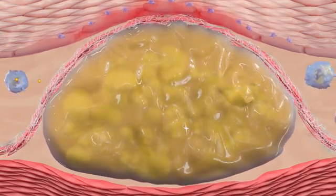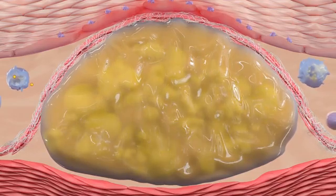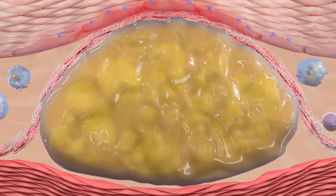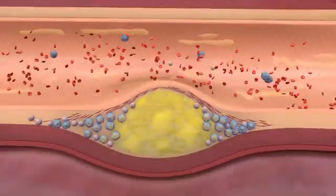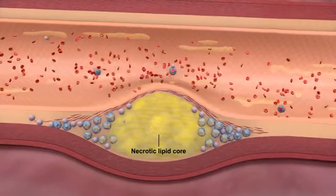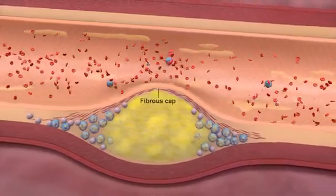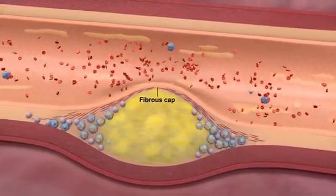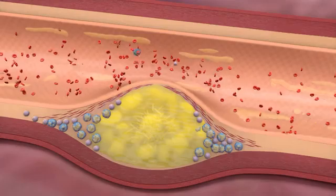Continued accumulation of cholesterol within foam cells promotes cellular dysfunction and necrosis that produces a core of necrotic lipid debris surrounded by a fibrous cap of varying thickness and cellularity.